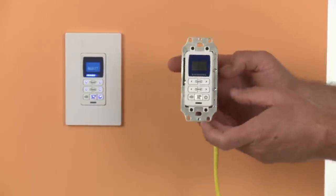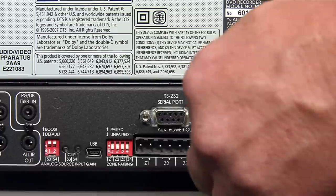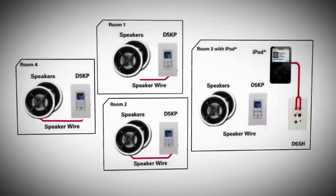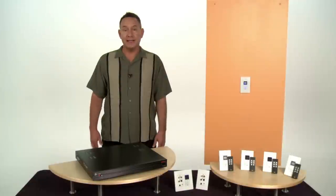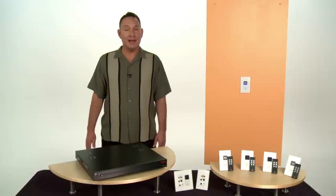After you've terminated the ends of the Cat5 cables with the RJ45 connectors, plug them into the keypads in each room. Back at the hub, plug the other ends into the outputs in each zone. Attach the speaker wire to the keypad. Finally, turn on the power at the hub, power up all your sources, turn on the keypad in each zone and you're done.